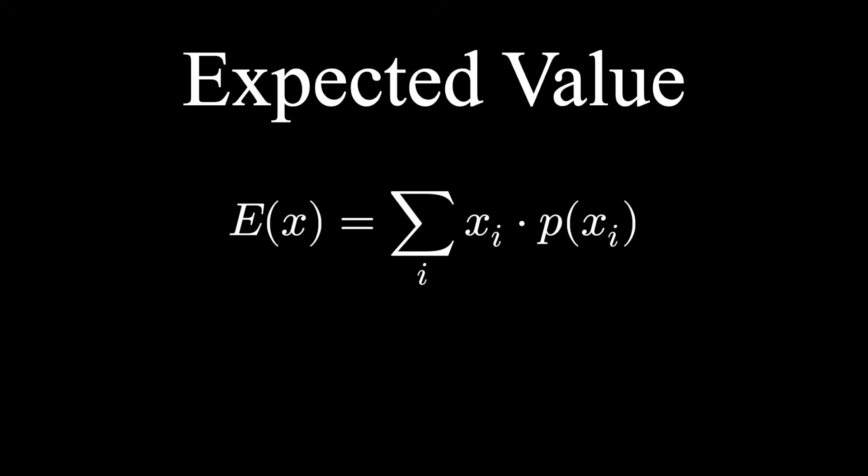The first possible outcome is winning one dollar. That happens if your first flip is tails, which happens with probability one-half. The second possible outcome is winning double, two dollars, by flipping a heads, then a tails.